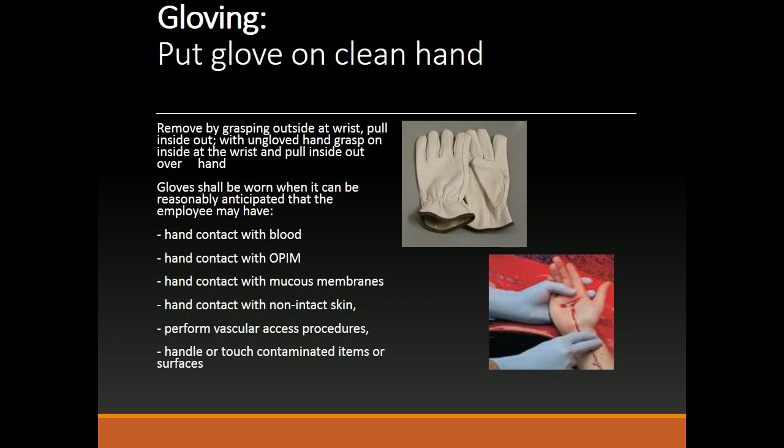Gloving. Put glove on clean hand. Remove by grasping outside at wrist and pull inside out. With ungloved hand, grasp on inside at the wrist and pull inside out over the hand. Gloves shall be worn when it can be reasonably anticipated that the employee may have: hand contact with blood, hand contact with a PIM, hand contact with mucous membranes, hand contact with non-intact skin, need to perform vascular access procedures, or need to handle or touch contaminated items or surfaces.